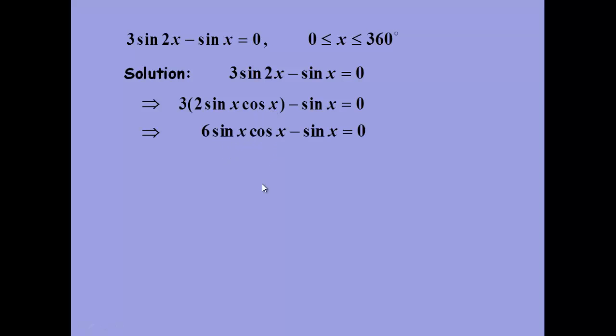So our sin 2θ formula gives us 2 sin θ cos θ. If we rearrange this, we can see that we can then get this. If we factor out sin θ, we've then got solutions where either sin θ equals zero or cos θ equals one-sixth.